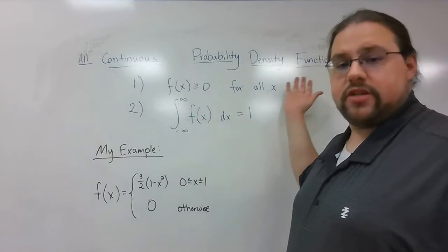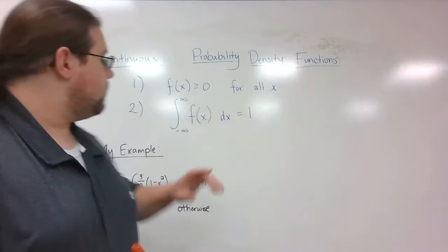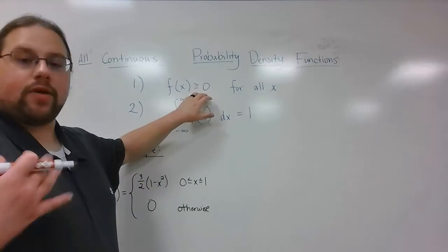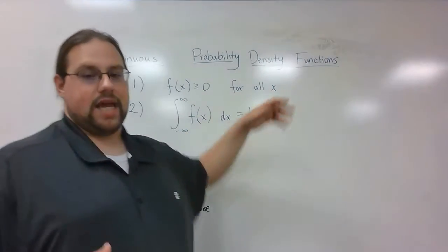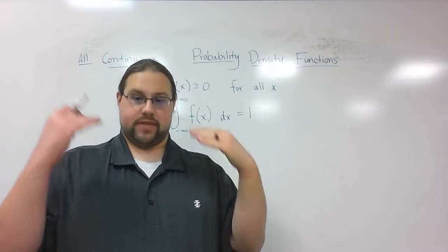So I'm going to give you the definition of all continuous probability density functions. It has to meet two things. First and foremost, when you find f of x, when you plug in x and get an answer, it has to be greater than or equal to zero for all x's. That means the best thing to do is to graph it and see what it looks like. Everything should be zero or above.